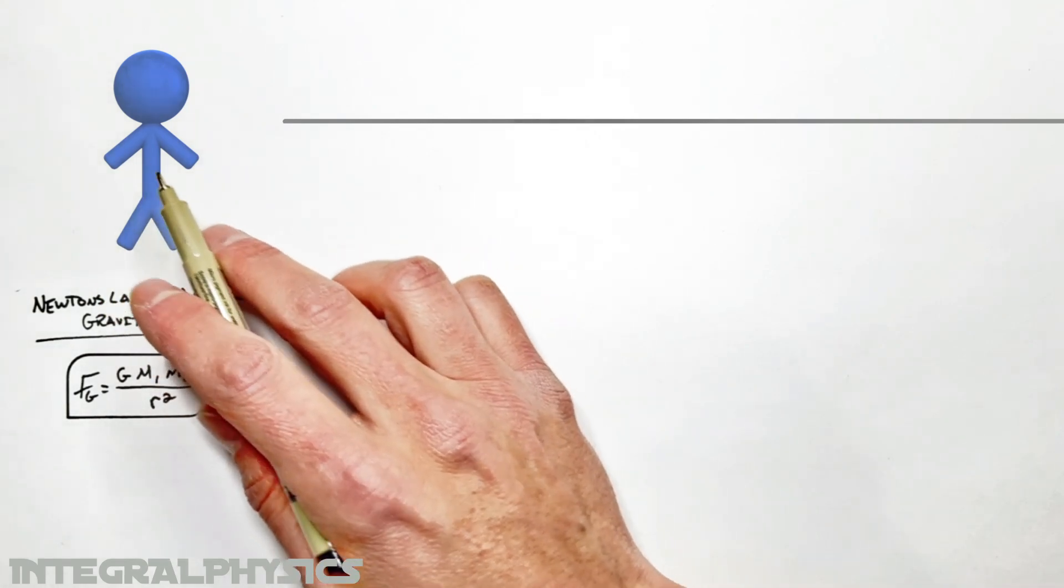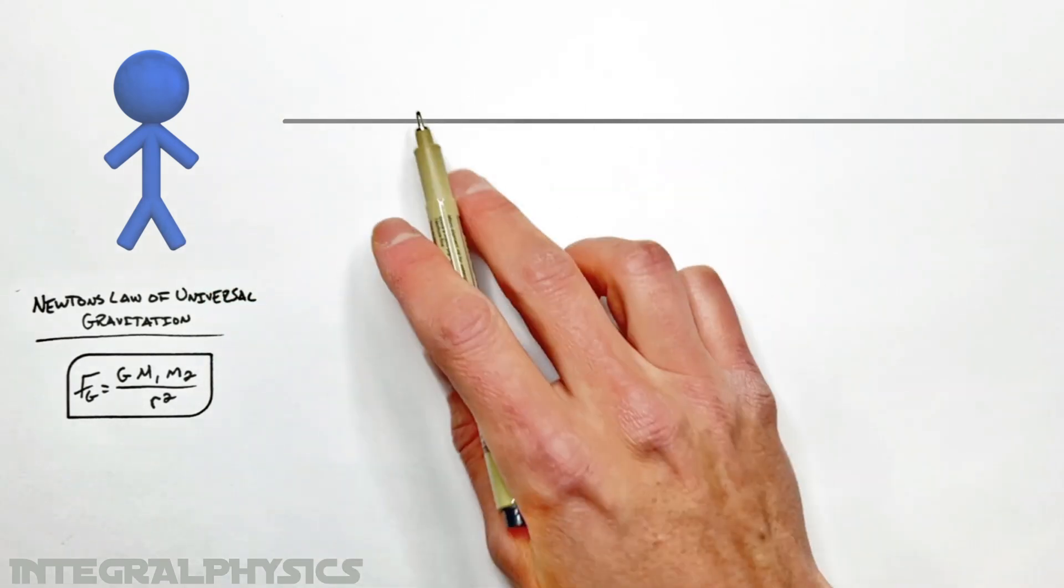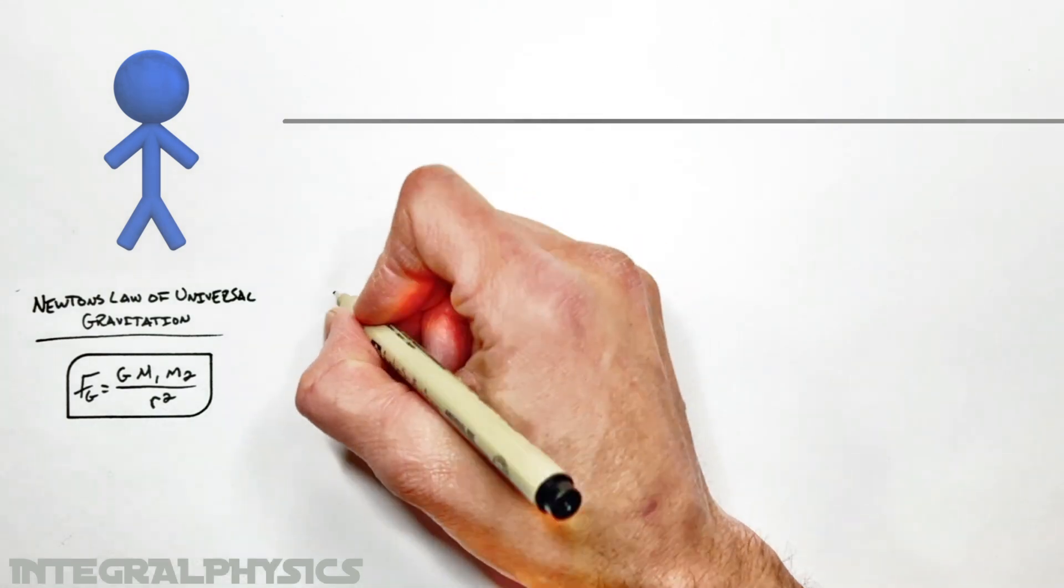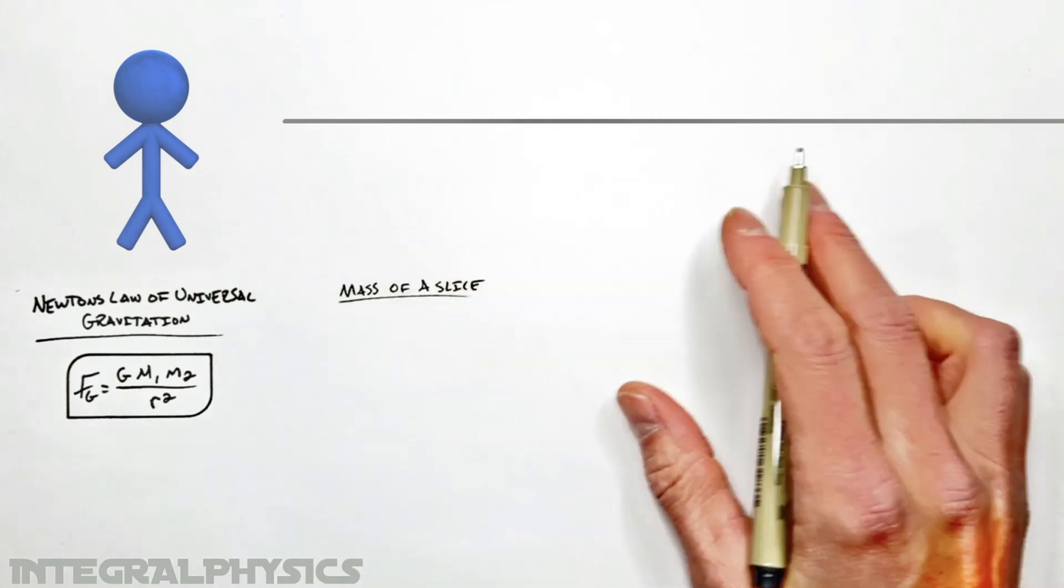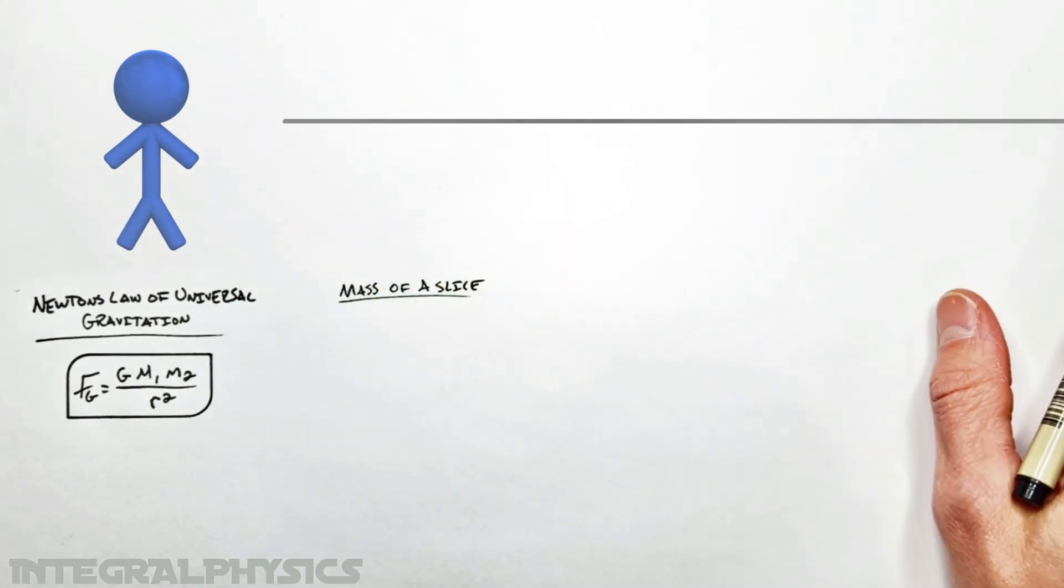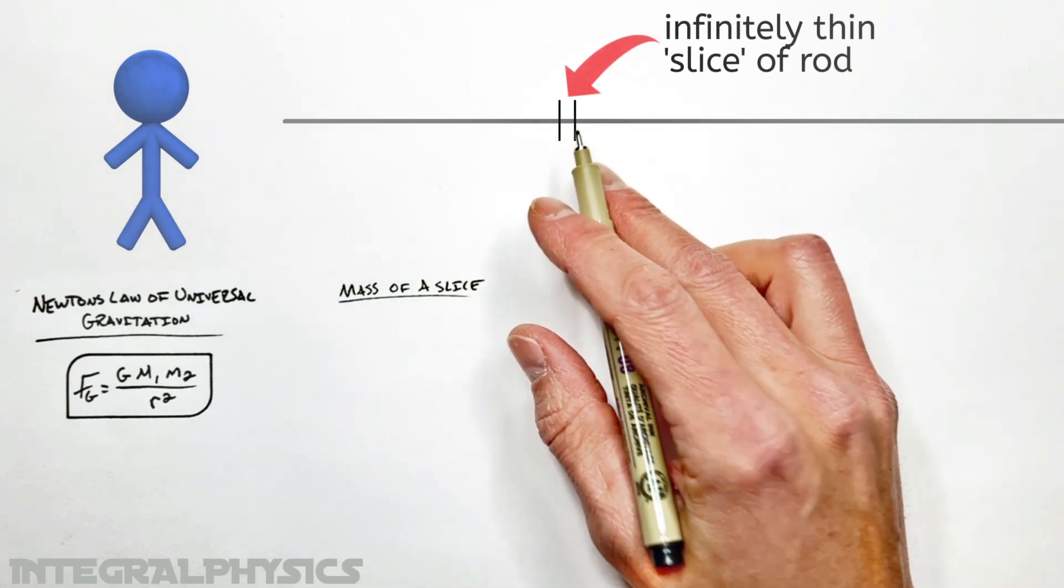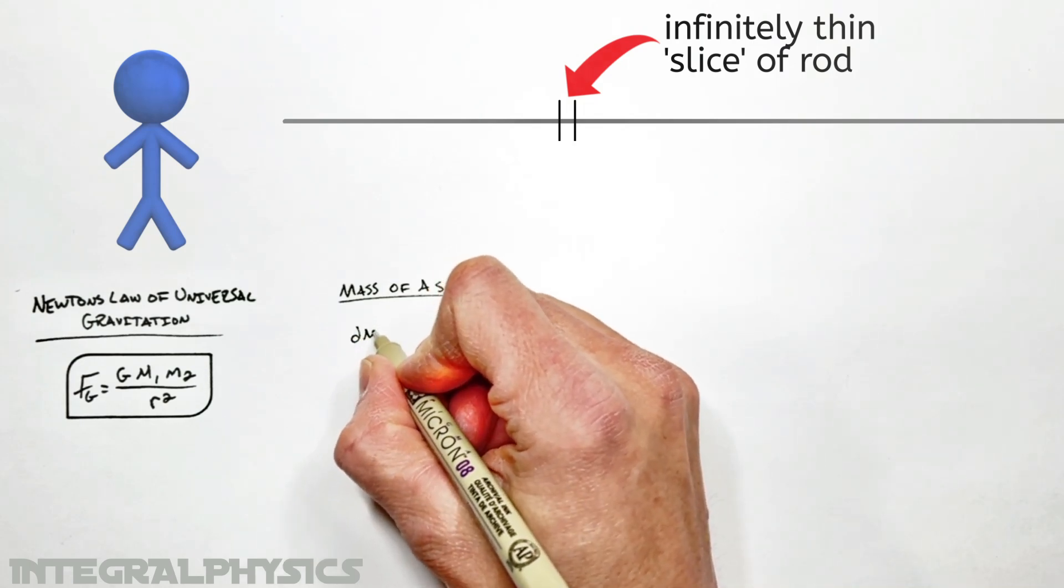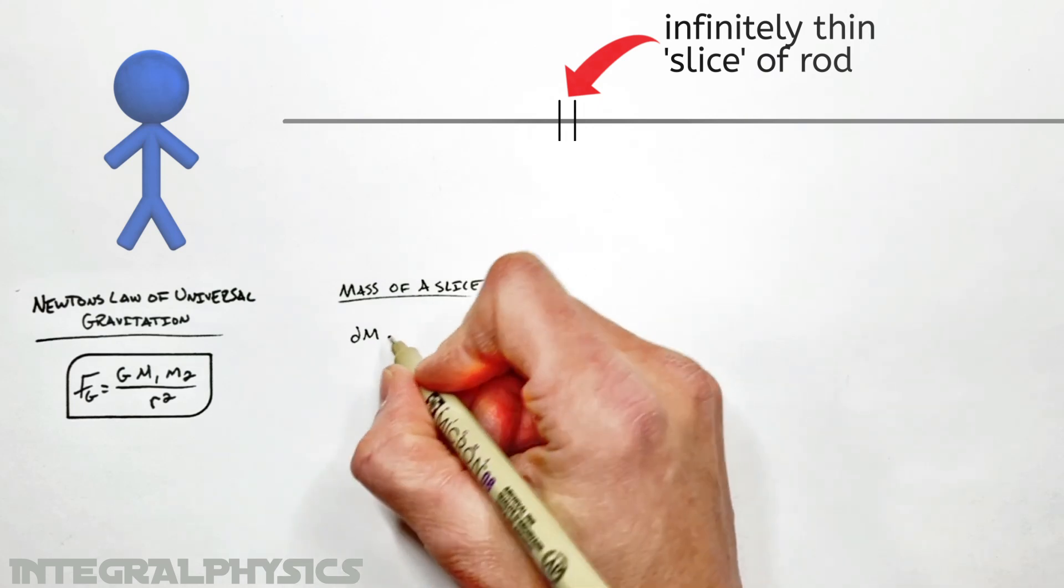Now to do that, what we're going to do is look at this rod as though it's actually an infinite number of little slices of rod. And the first thing we're going to do is look at the mass of one little slice of this rod. Now what we're going to do is say that this rod has a certain mass. And if this rod goes on forever, that mass is going to be infinite. But a single slice of the rod isn't going to have infinite mass. We're going to say it has some tiny little amount of mass. I'm going to call that dm. It's an infinitely small chunk or slice of the total mass of the rod.